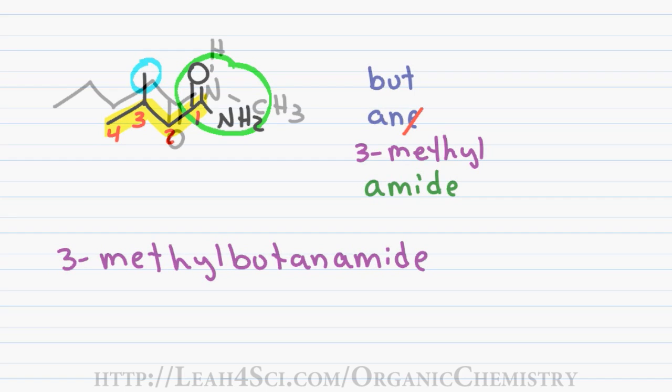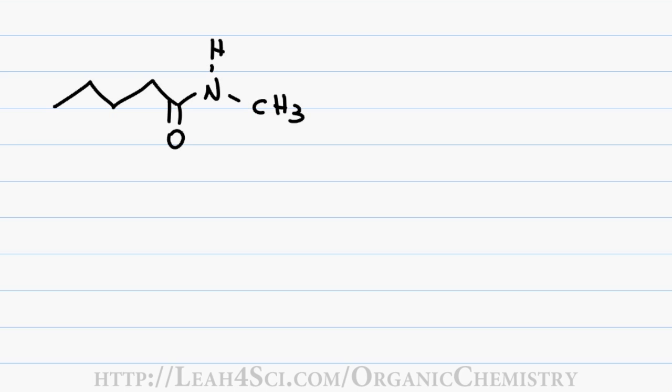When this substituent occurs on the nitrogen rather than the parent chain, you treat it the same way but instead of having a number preceding your substituent, you have the letter N.